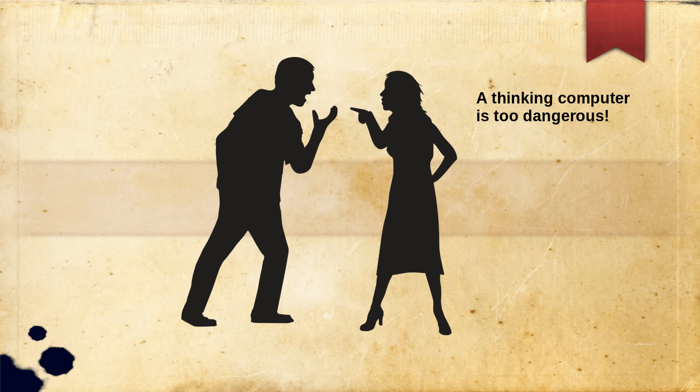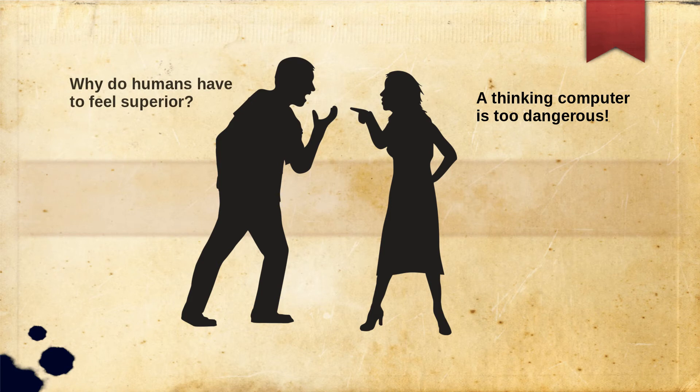Objection 2: The consequences of a thinking machine are too dreadful. Who knew the Terminator was already a concern in the 1950s? Turing argues that this comes from humanity's sense of superiority. He says we like to believe that man is in some subtle way superior to the rest of creation. Will a thinking machine be superior to us? Yes or no, this doesn't mean that it is impossible to have a thinking machine.